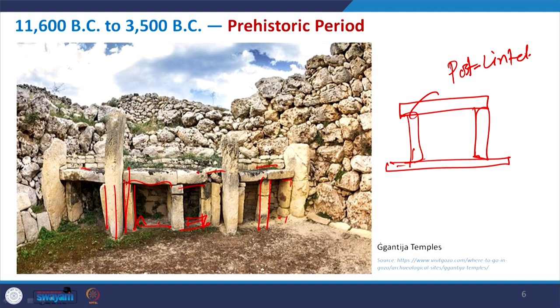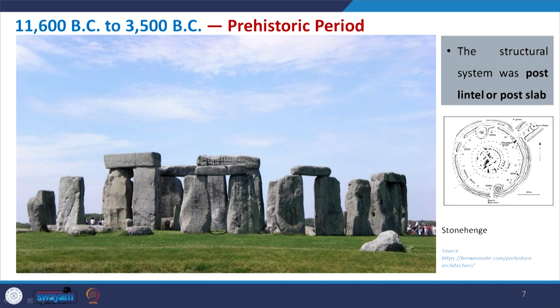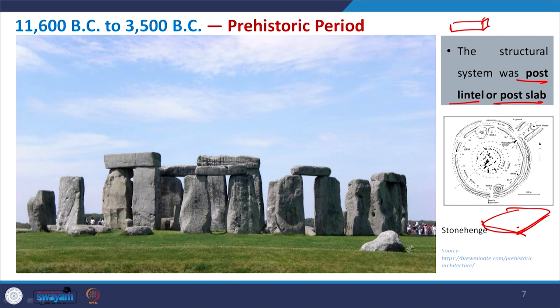From this arrangement came the idea of giving stability to a structure where a horizontal member rests on a vertical member — what we later named the post-lintel or post-beam structure. Stonehenge is another prehistoric example following the same arrangement of post-lintel or post-slab. Depending on the span and area of the stone, we call it a slab when it has considerable length and width, or a lintel when it is just a piece like a beam.